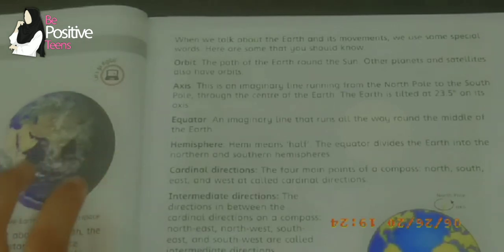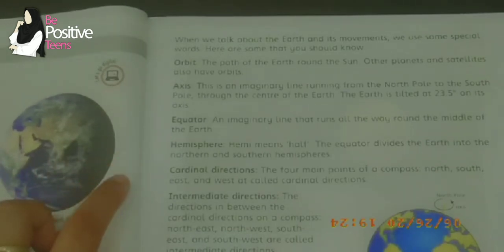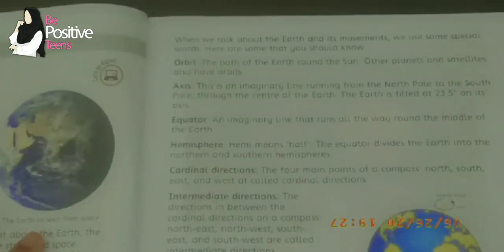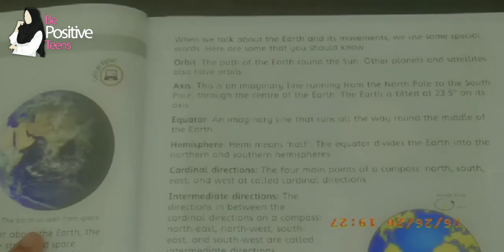Next is axis — an imaginary line running from the north pole to the south pole through the center of the earth. The earth is tilted at 23.5 degrees on its axis. This line does not actually exist; we are imagining it.